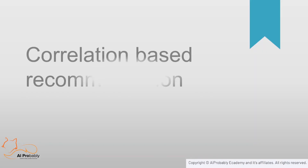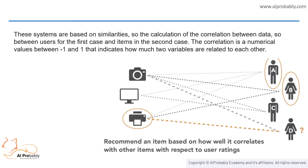Let's see what a correlation-based recommendation system is. It is the recommendation based on correlation — how two variables can be related to each other. These systems are based on how similar the choices are. It's done using Pearson's coefficient, and the value would range from minus one to plus one. If the value turns out to be plus one, it is positive correlation and would be highly recommended to the other user. If it's minus one, it's negative correlation and the item wouldn't be recommended to the other user.